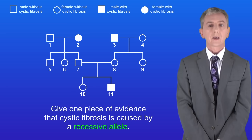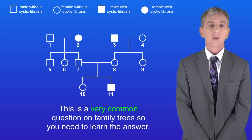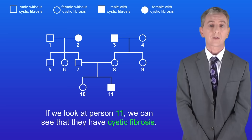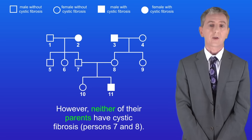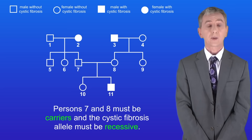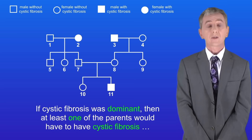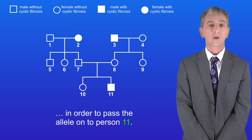Here's the next question: give one piece of evidence that cystic fibrosis is caused by a recessive allele. This is a very common question on family trees so you need to learn the answer. If we look at person 11 we can see that they've got cystic fibrosis, however neither of their parents — persons 7 and 8 — have cystic fibrosis. Persons 7 and 8 must be carriers and the cystic fibrosis allele must be recessive. If cystic fibrosis was dominant then at least one of the parents would have to have cystic fibrosis in order to pass the allele on to person 11.